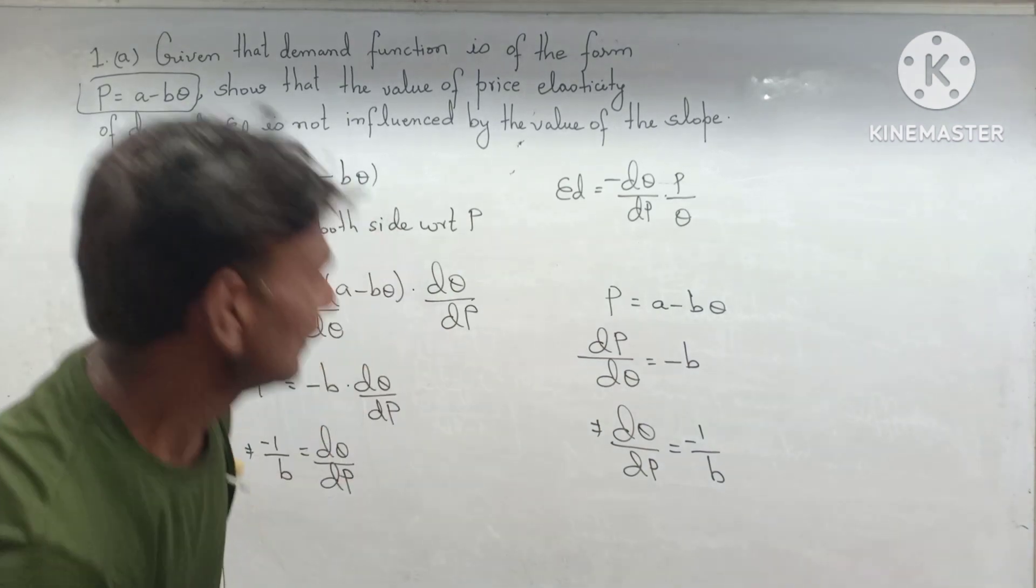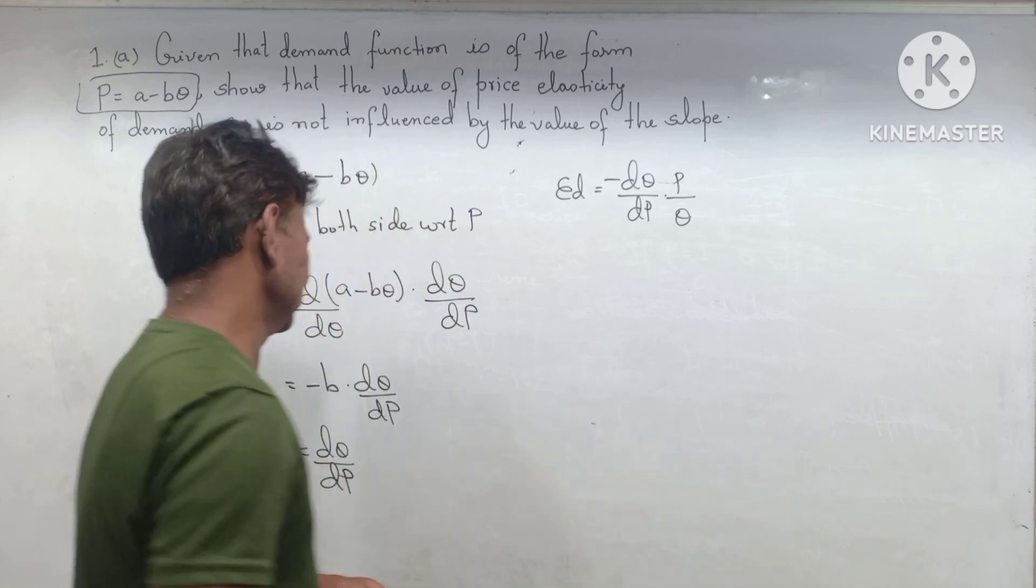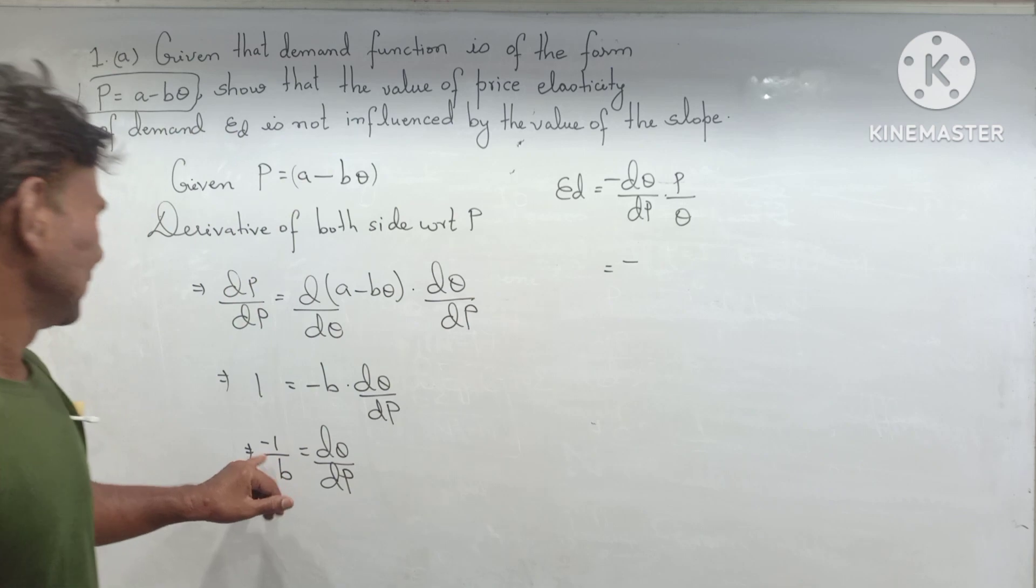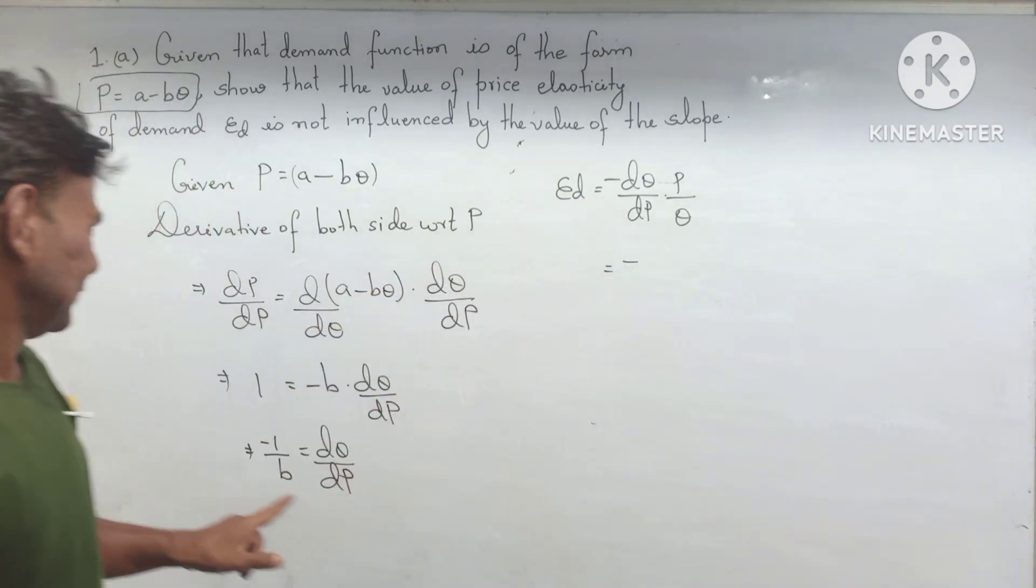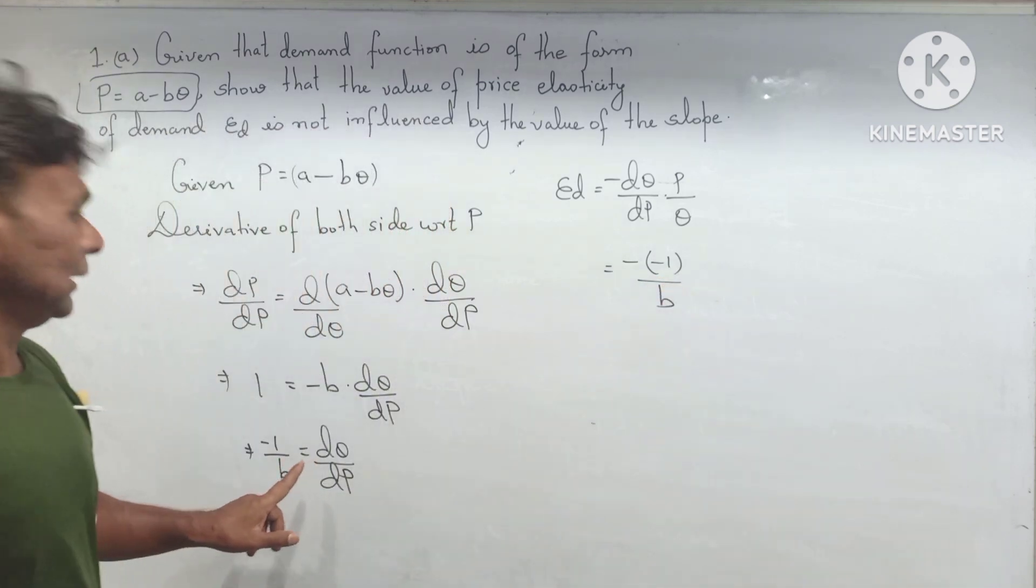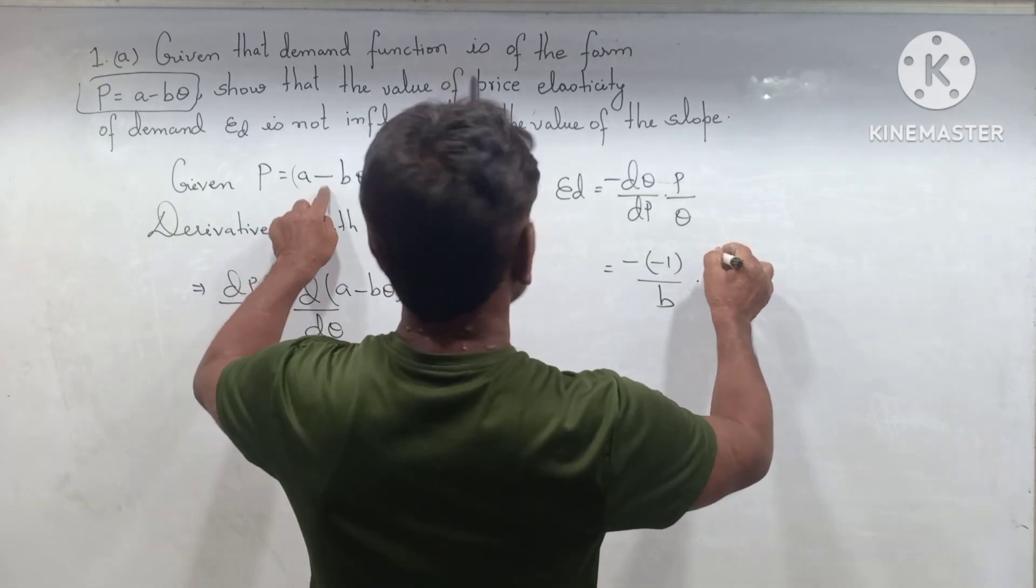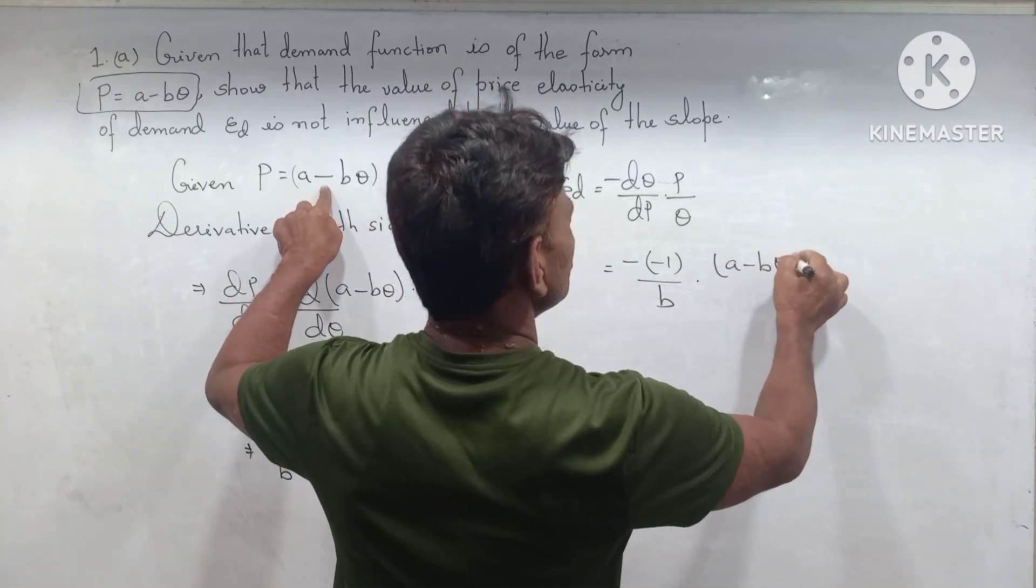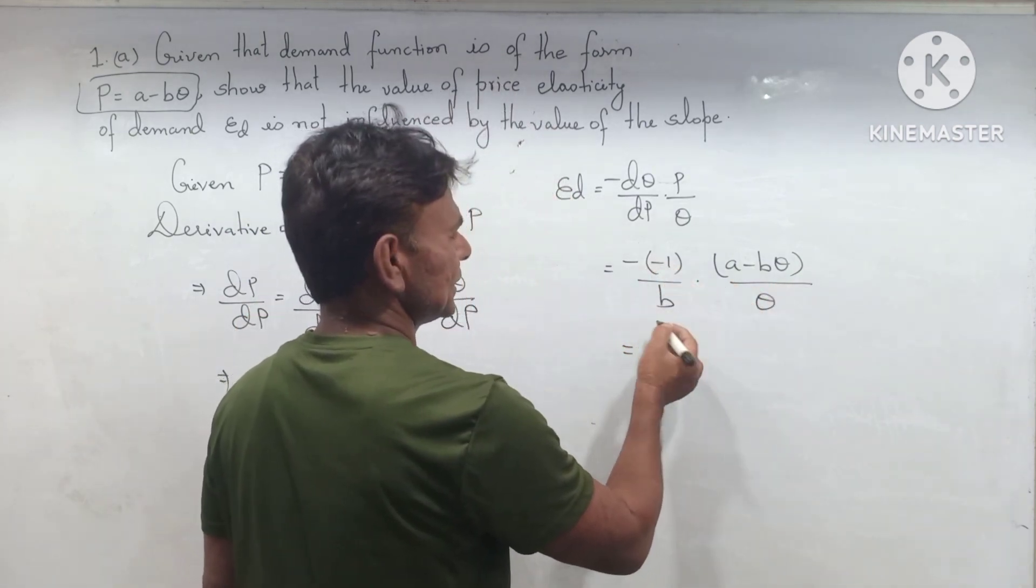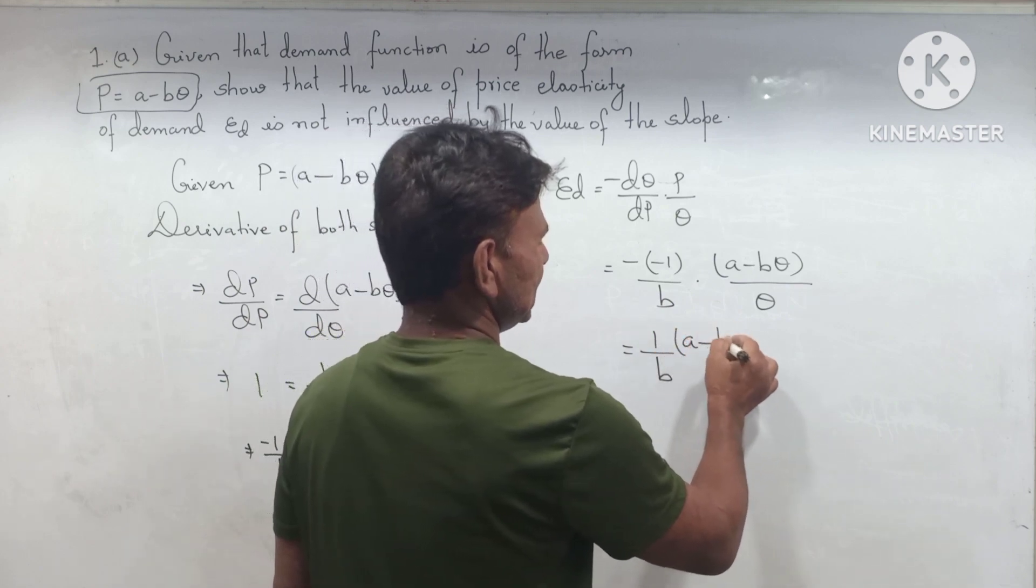Now the final formula. Substituting the value of all these things: DQ/DP equals -1/B, times P. What value is P given? A - BQ, divided by Q. Minus into minus plus, 1/B times (A - BQ) divided by BQ.